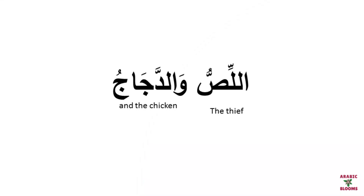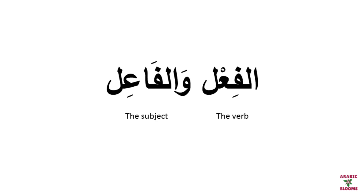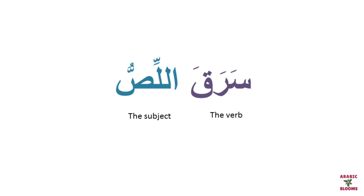اللص means the thief, والدجاج means and the chicken. In this lesson, you will learn الفعل, which is the verb, والفاعل, which is the subject. Every verb must have a subject. For example, سرق is the verb, which means 'stole.' How do we know the subject? We ask: who did this?